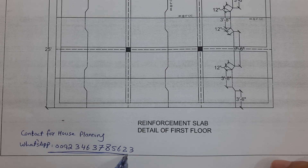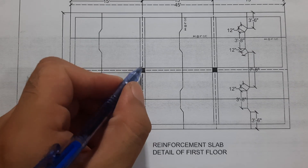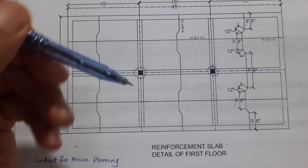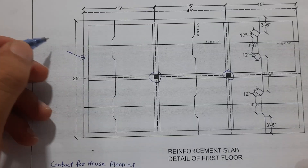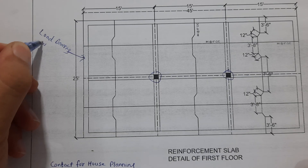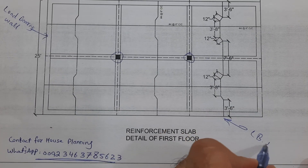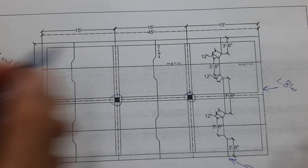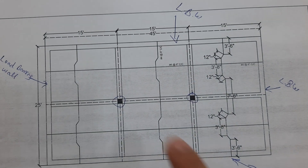Here we have two columns — this one and this other one. These dotted lines show you the beams. This beam is a cantilever. Here you can see a load bearing wall at the front side, and load bearing walls also on this side and this side.